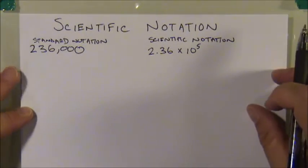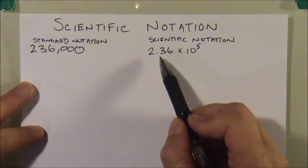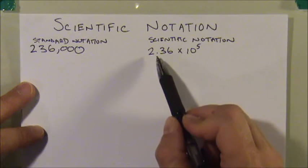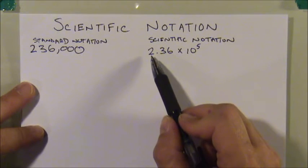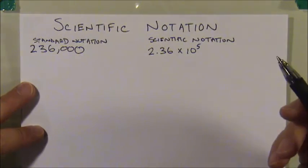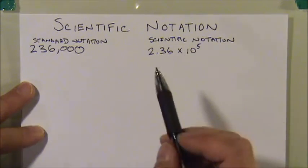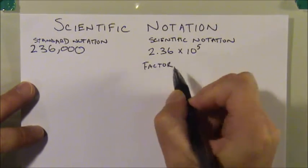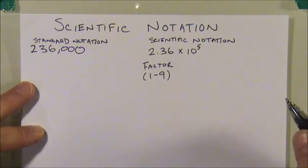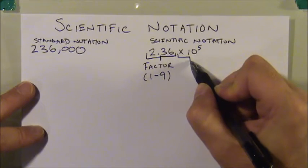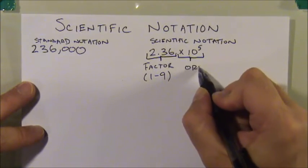The number could have been written several ways: 2.36 × 10⁵, or 23.6 × 10⁴, or 236 × 10³, and so on — all represent the same number. But the standard form of scientific notation places one non-zero digit to the left of the decimal. That number is called the factor, and it should be between one and nine. The second part is called the order of magnitude, which is simply the power of ten.